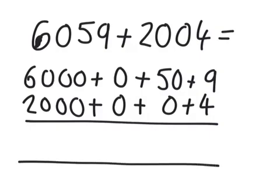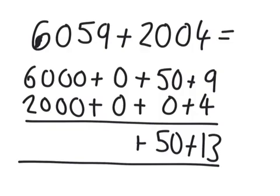Add them together: 4 and 9 is 13, 50 and 0 is 50, 0 and 0 is 0.